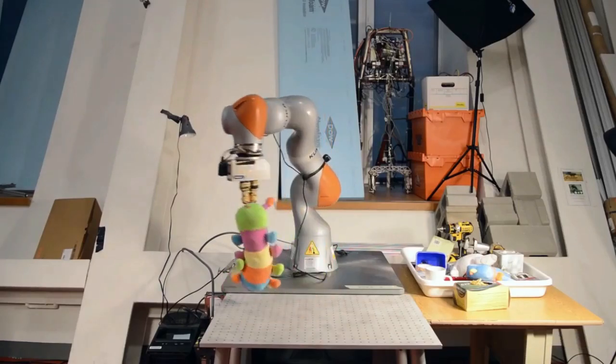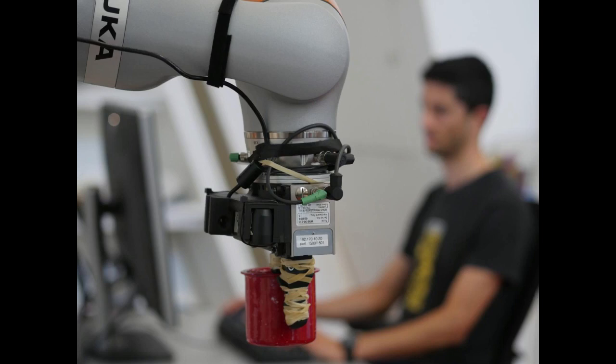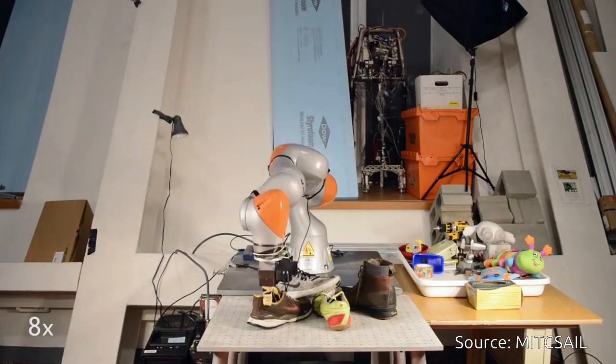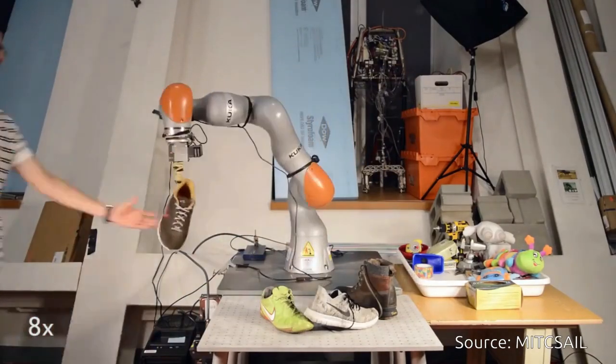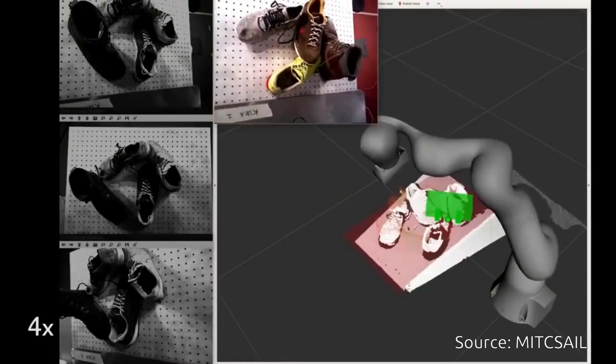Most importantly, it allows them to even pick up a specific object among a collection of similar objects—a valuable skill for the kinds of machines that companies like Amazon and Walmart use in their warehouses.